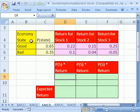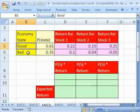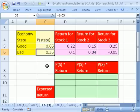Here's a basic stock example. We have an estimate for the future. We think the economy could be good or bad. The probability of it being good is 0.65. The probability of bad, 0.35.